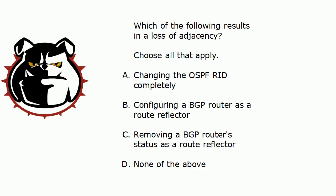Which of these will result in a loss of adjacency? This is the kind of thing we better know for the real world too, because if we lose adjacencies at the wrong time that is never going to be good. The options are: changing the OSPF RID completely, configuring a BGP router as a route reflector, removing a BGP router's status as a route reflector, or none of the above. And I know if there's one phrase we all hate more than pop quiz it's 'choose all that apply' — but they are good for us in the end, just like spinach I guess.